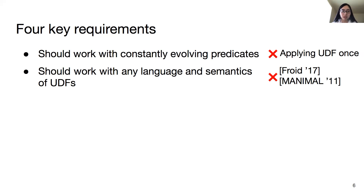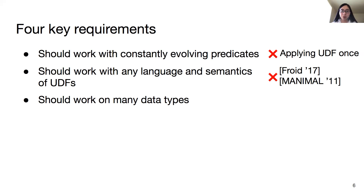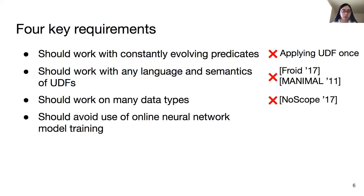Third, it should work on many data types, but the difference detector component in NoScope is only useful for videos. Fourth, it should avoid the use of online neural network model training, like in Blazeit, because it is expensive and error-prone.